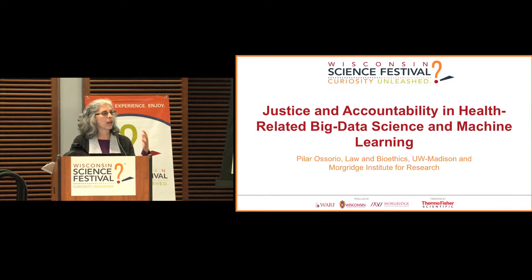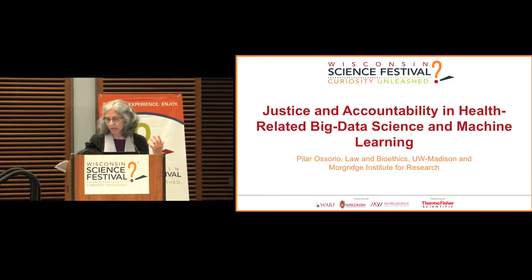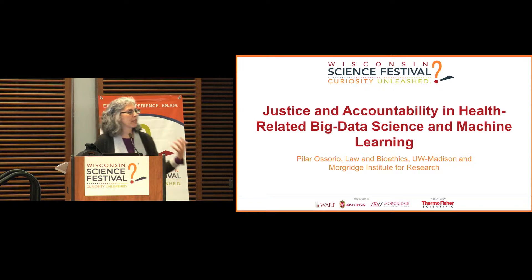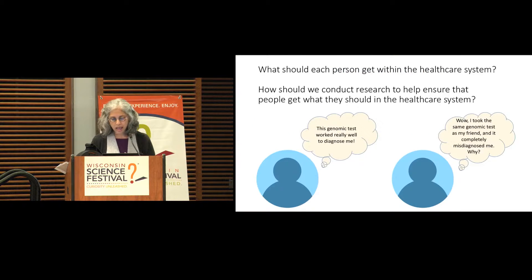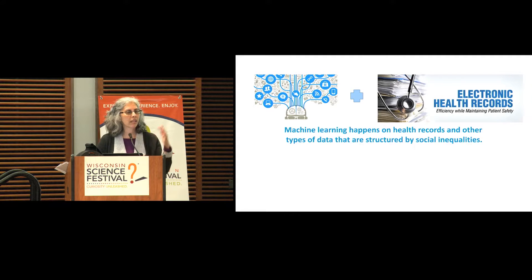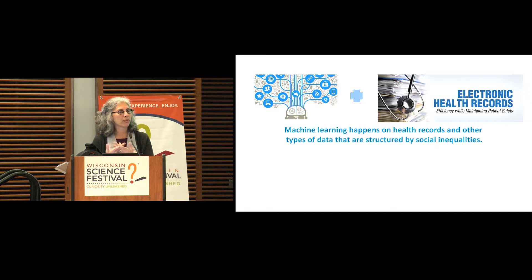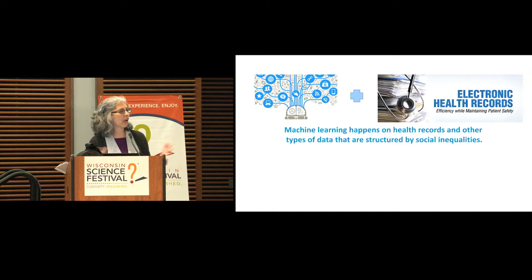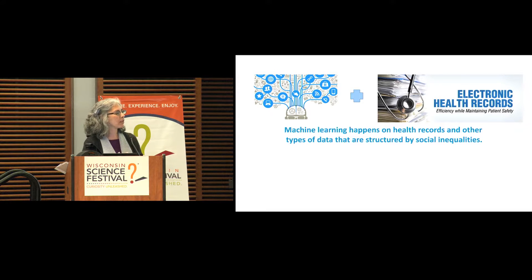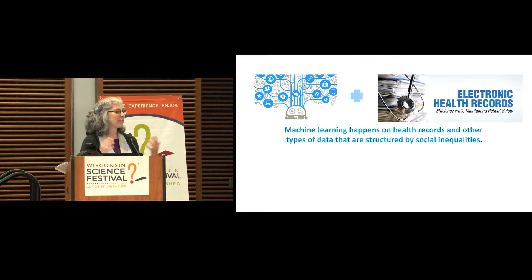Think for a minute about training an algorithm to predict the five-year risk that somebody would die from heart disease. How might we do that? We might train it using a variety of different things — electronic health records is going to be one of the major training data sets. We might also use some genomic data, some survey information about diet, or Fitbit information about exercise habits. We're going to use all that data, and the algorithm will train on those data — maybe from a large healthcare system in northern Wisconsin, for instance.